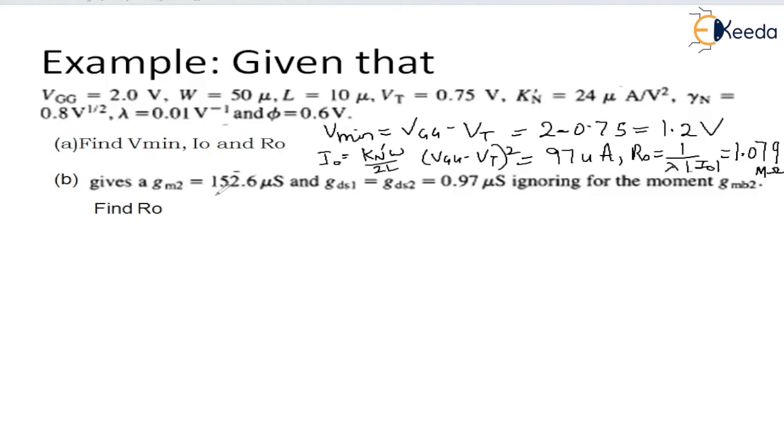We have already seen in the previous lecture the value of R0 is given as Rdx2 times (1 plus Gm2 plus Gds2 times Rdx2 times Rdx1). Neglecting this value to zero and substituting all the given values, we get the result as 1.64.